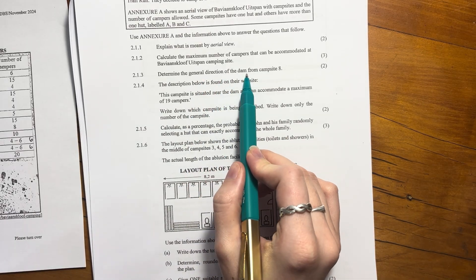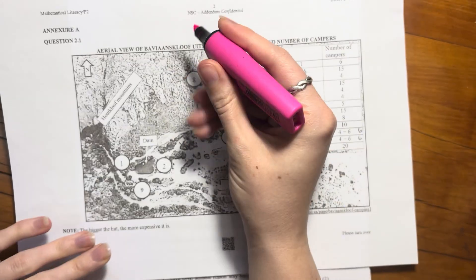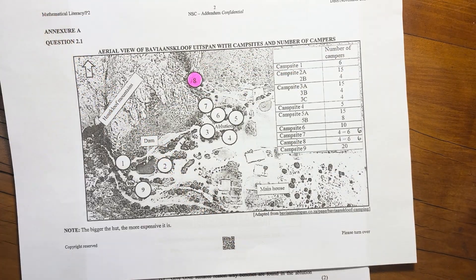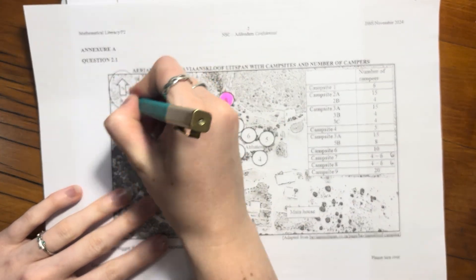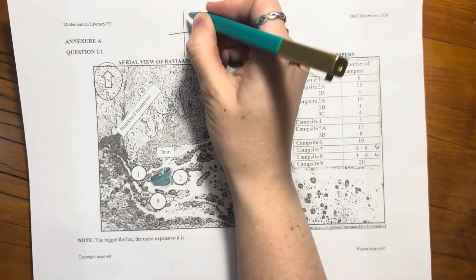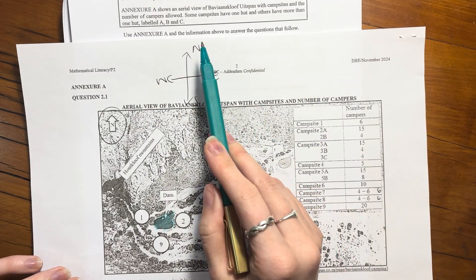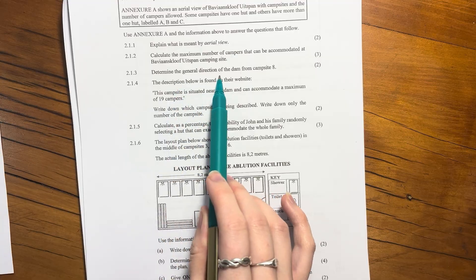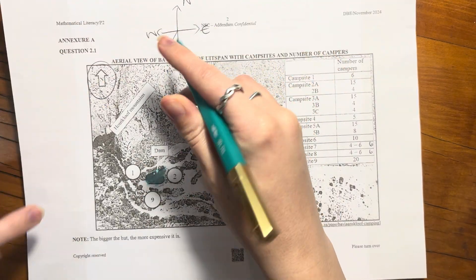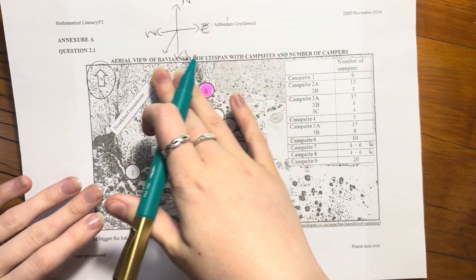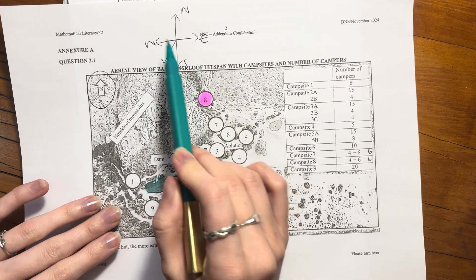Question 2.1.3 asks you to determine the general direction of the dam from campsite 8. Remember the compass: North, East, South, West — 'Never Eat Silkworms'. Standing at campsite 8 and looking toward the dam, it's going to be Southwest. When you're between two directions, you always say South or North first, so it's Southwest, not West-South.